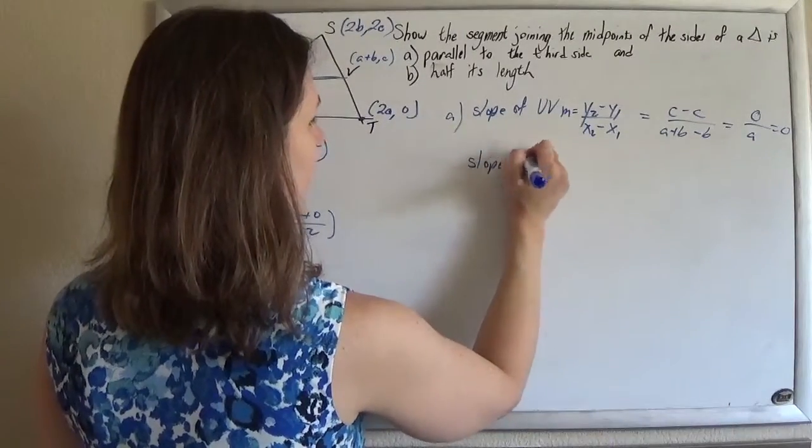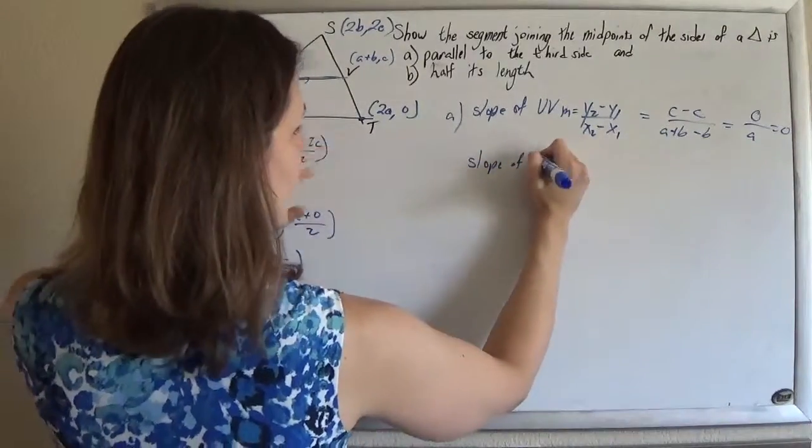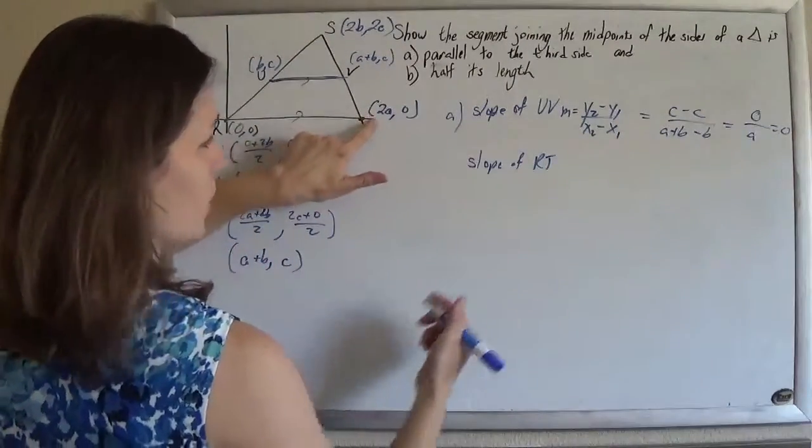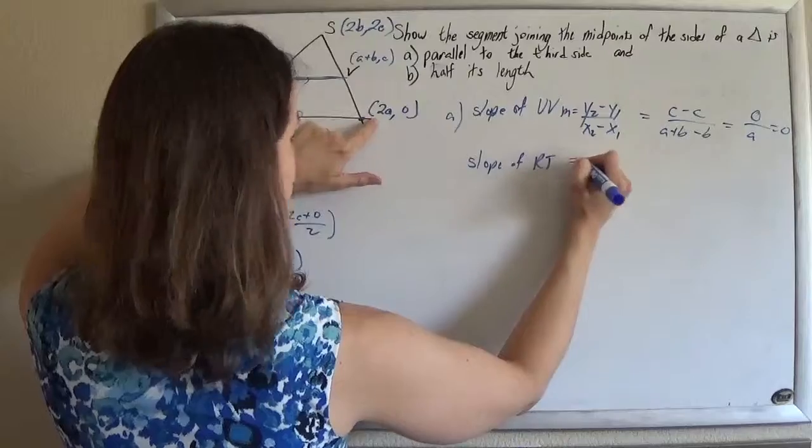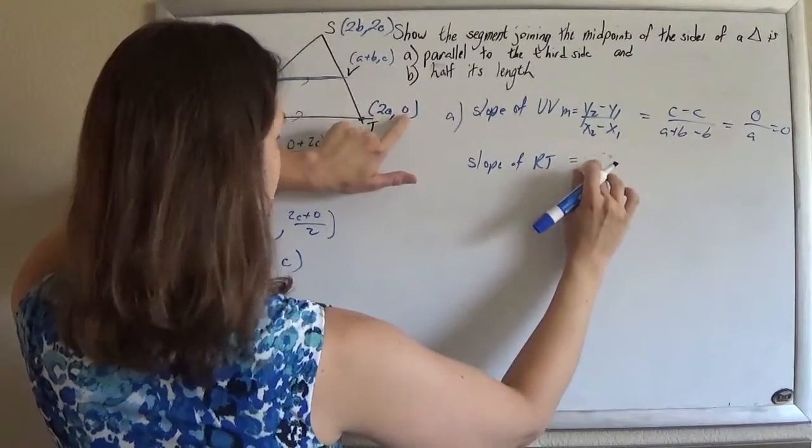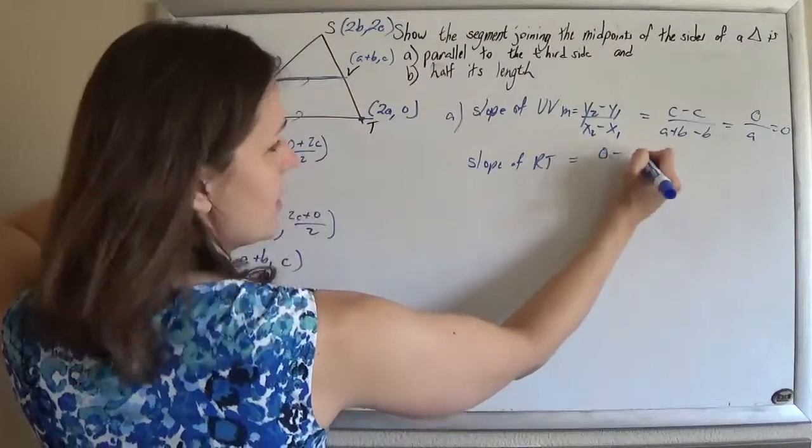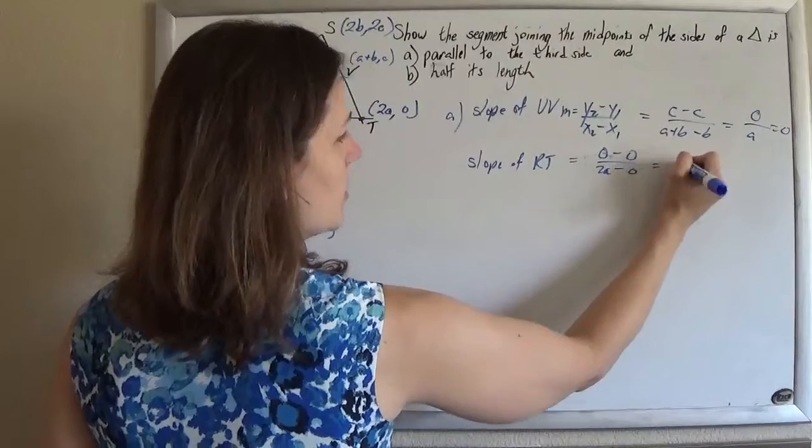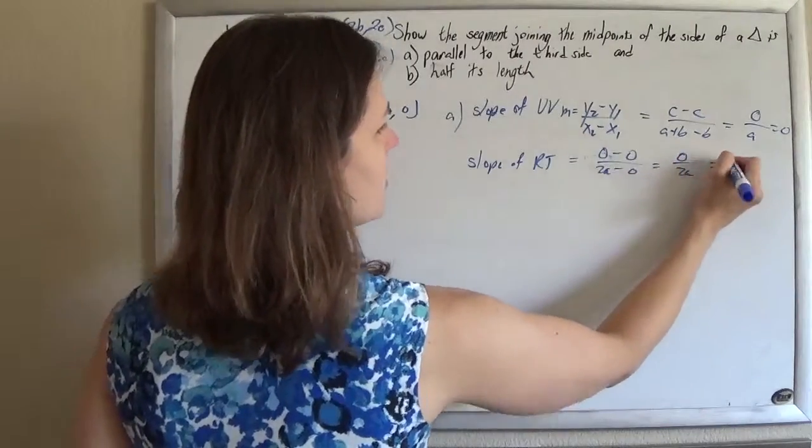And then we do the slope of rt, and you can tell that that's horizontal too. I mean, it's on the x-axis, but we'll do it all out anyway. So this is going to be change in the y's. So 0 minus 0 over the change in the x's, 2a minus 0. So it's 0 over 2a, which is 0.